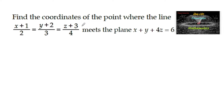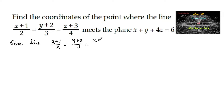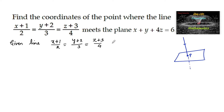Find the coordinates of the point where the line (x+1)/2 = (y+2)/3 = (z+3)/4 meets the plane x+y+4z = 6. When this line meets a plane it intersects at a point. Let us consider that point as P. To find the coordinates of point P, we equate the line equation to lambda, where lambda is a real number.